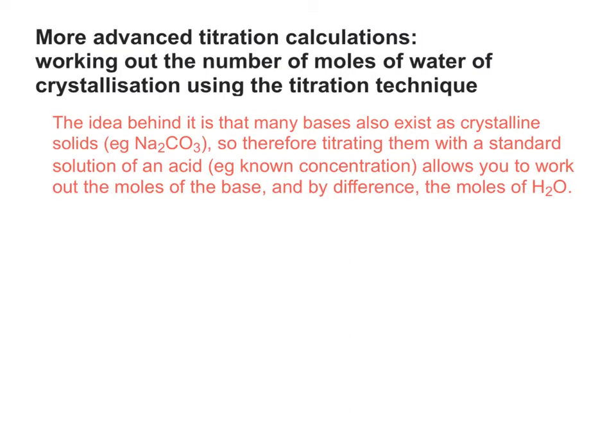The idea is that many bases, particularly things like group 1 and group 2 carbonates, exist as crystalline solids. To exist as a crystalline solid, something has to have water of crystallisation attached to it in its ionic lattice so that the water of crystallisation molecules allow the crystalline structure to form.